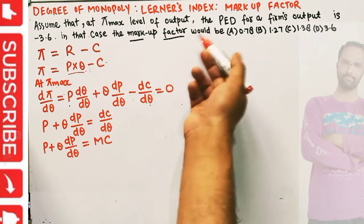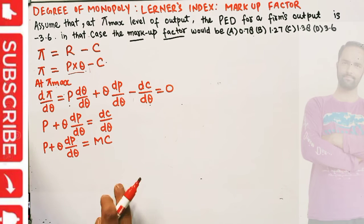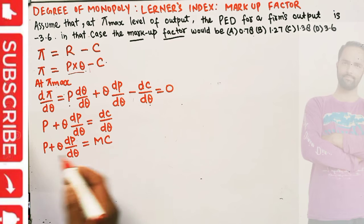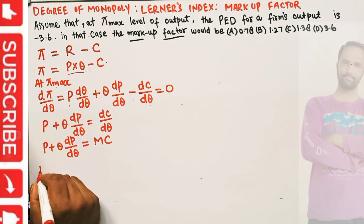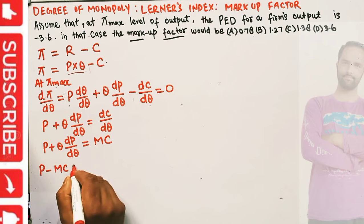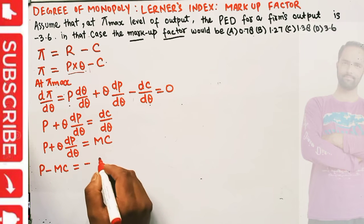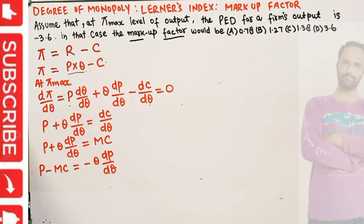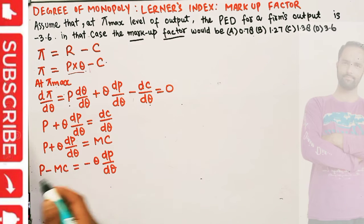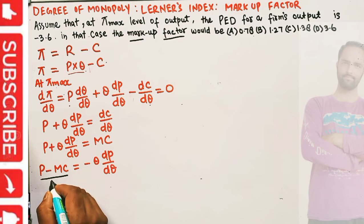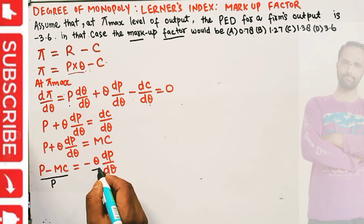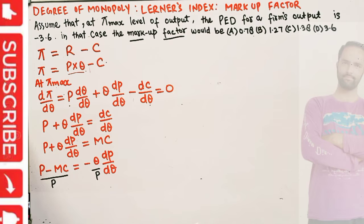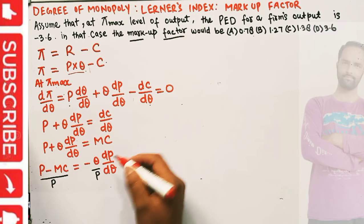Now doing some algebraic manipulation: transposing MC gives p - MC = -q(dp/dq). Then dividing both sides by p: (p - MC)/p = -q/p · dp/dq.